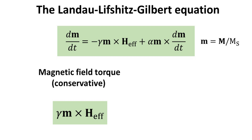The conservative torque arises from the interaction between the magnetization and a conservative field, such as an external magnetic field. This term tends to align the magnetization with the field and is responsible for the precession of the magnetic moments around the effective field.